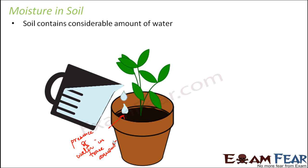Wet or waterlogged soil is something which should be avoided. If you talk about the right balance, any soil should contain 25% water and 25% air. If a soil contains 25% water and 25% air, we say it has the right amount of moisture and air. Aeration is needed because it creates porous spaces between the particles of organic matter, and that is also required.